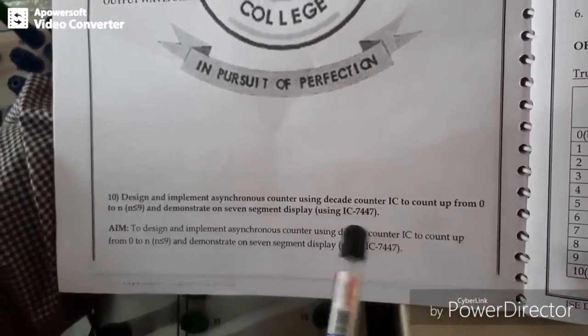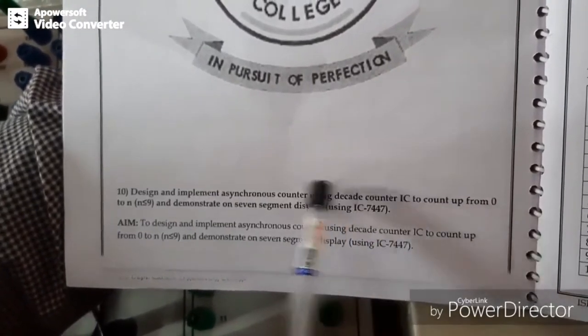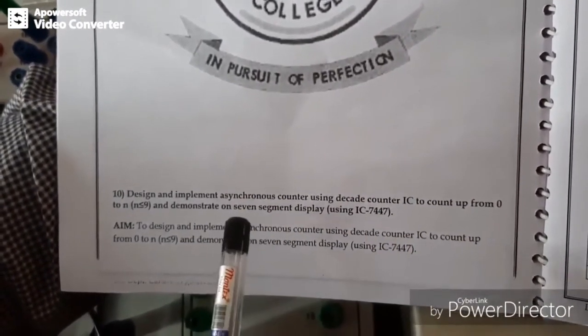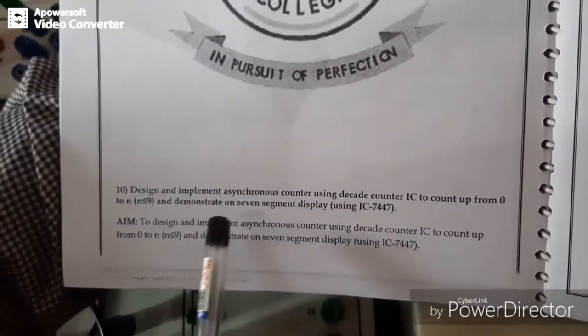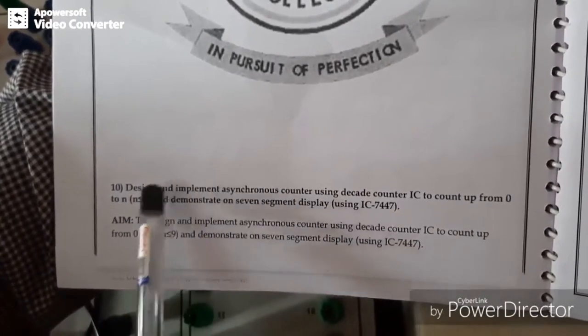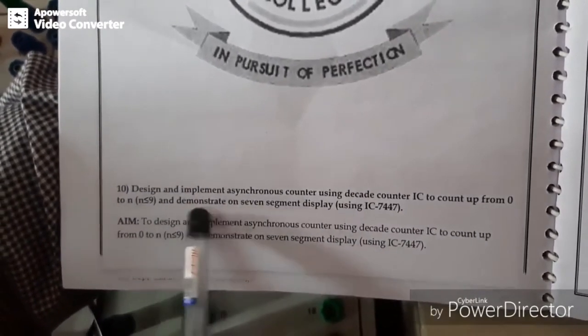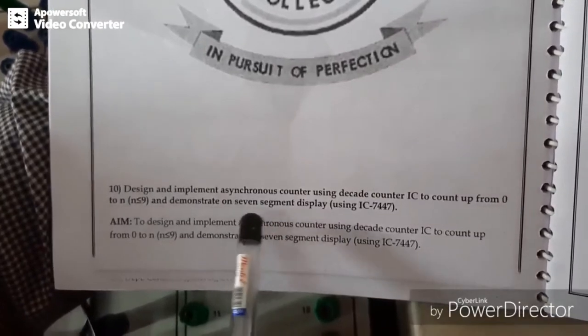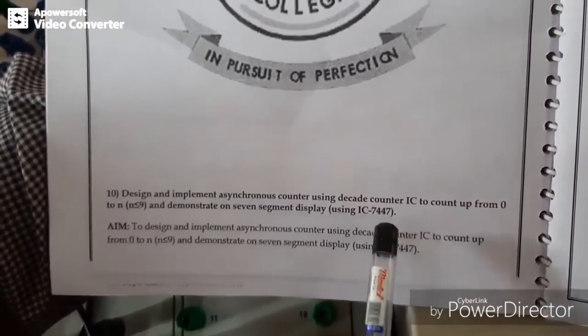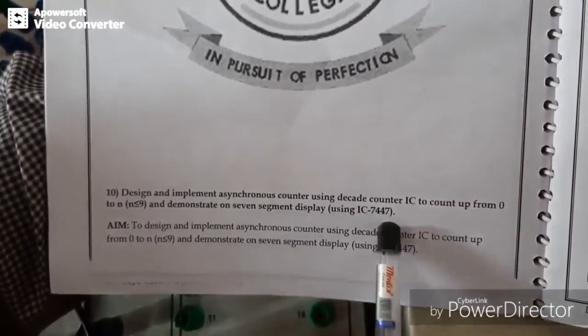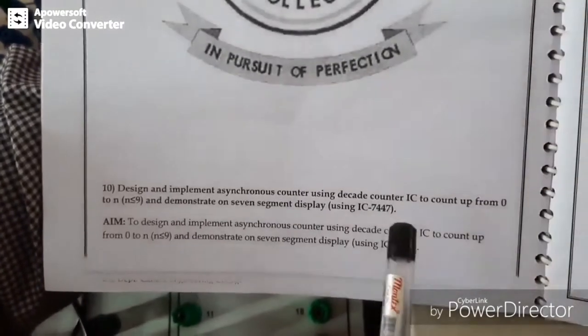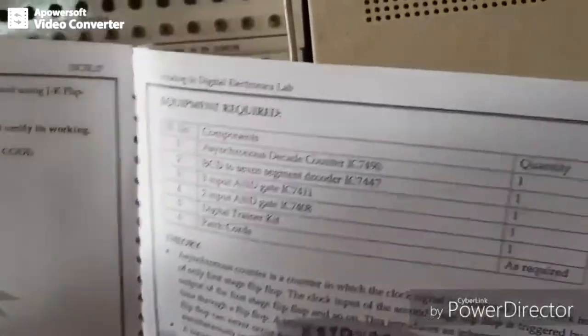So here we are going to design a decade counter and we will display the counting process by using one more IC, that is 7447. 7447 is a decoder driver for 7 segment display.